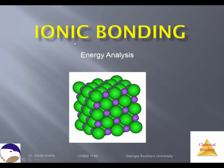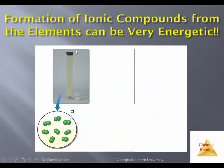Ionic bonding, one of the big classifications of bonding. We're going to take a close look at this type of bonding in terms of the energy that's involved. The formation of an ionic compound from the elements can be very energetic or exothermic — a word we use to say energy is given off.